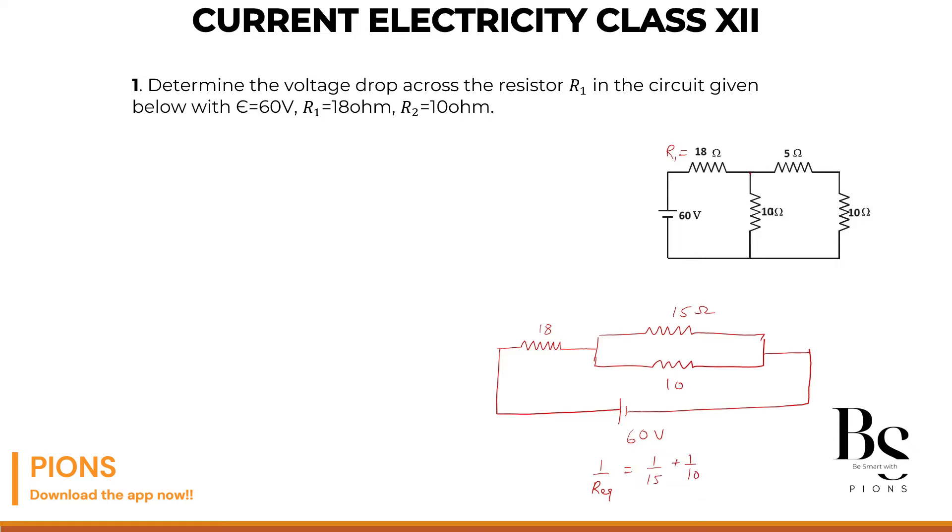1 by R equivalent equals 1 by 15 plus 1 by 10. This will be 10 plus 15, which is 25 upon 150. R equivalent equals 150 upon 25. Simplifying: 5 into 30 is 6. So R equivalent of this whole circuit is 6 ohms.